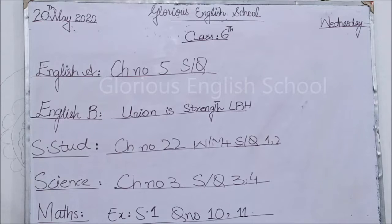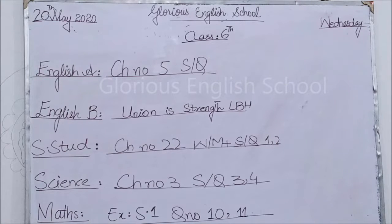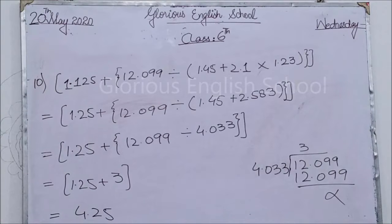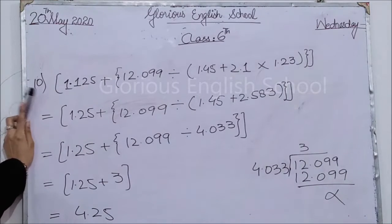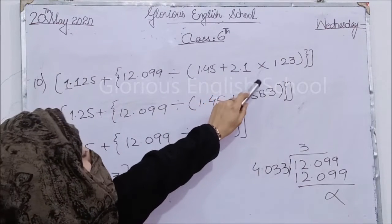Now come to last: Math, Exercise 5.1, questions 10 and 11. Ab hum math start karte hain. Question number 10 mein aapko yahaan pe explain kiya jaayega. Ispe sabse pehle round bracket ke andar jo values hain unko solve karna hai.